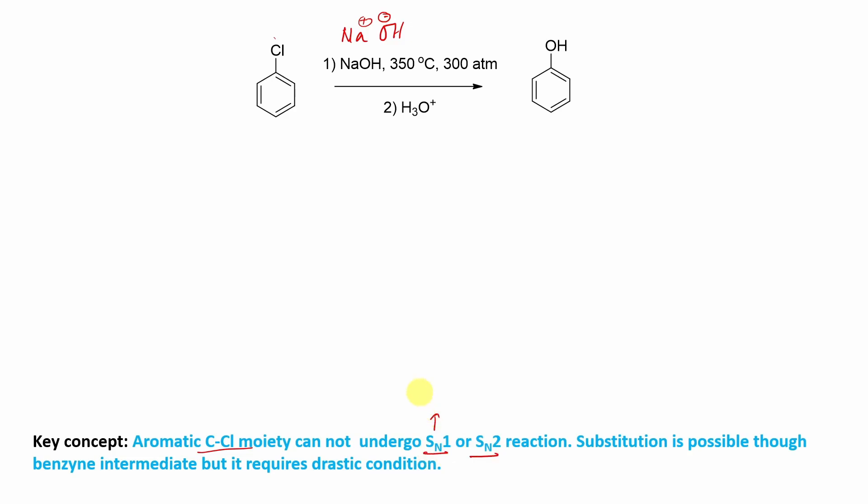Because aromatic C-Cl moiety or C-Cl bond cannot undergo SN1 or SN2. Why not SN1? Because the phenyl carbocation is unstable. It is phenyl cation, not benzyne. Don't get confused. And SN2 reaction is not possible because these pi electron clouds will repel the incoming nucleophile because nucleophile is also an electron rich species. So that's why substitution is not possible by these two traditional methods, SN1 and SN2.